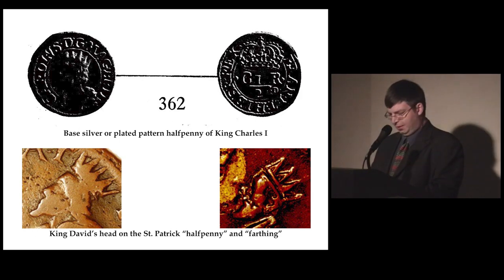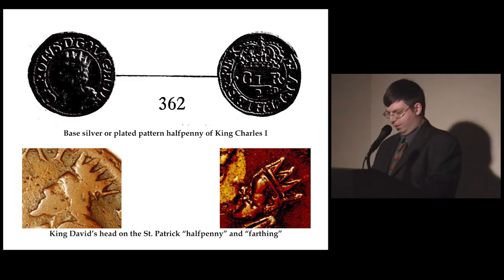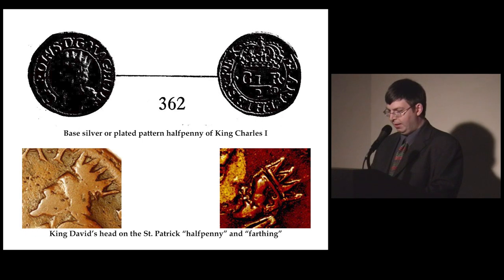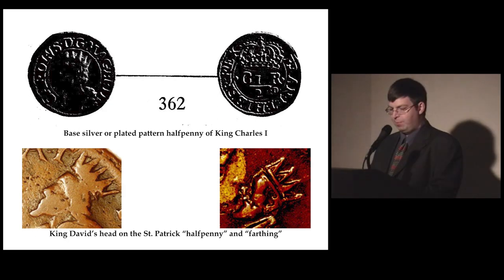However, despite this similarity, there is no evidence that the portrait coins depicting Charles I wearing this form of crown ever saw circulation and therefore could have served as a model for David on the St. Patrick coinage. In any case, the radiate crown, also known as the eastern crown or antique crown in heraldic terminology, like the beard and hair style, was not an attribute specific to Charles I and therefore cannot be taken as proof that David was a representation of Charles I.